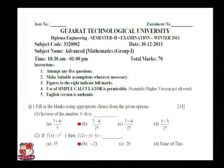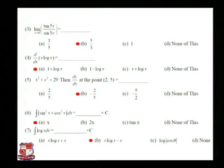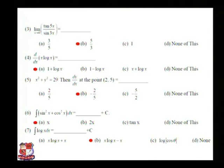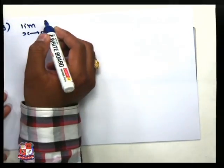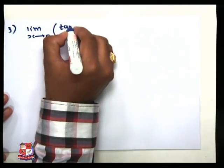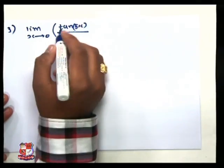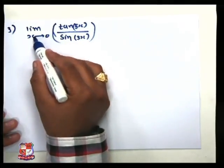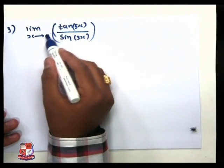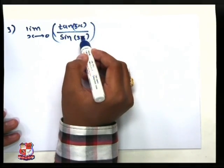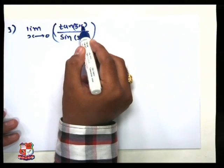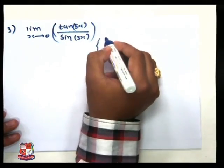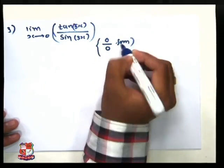Now we want to move to our third question. The third question is: limit as x tends to 0 of tan(5x) divided by sin(3x). This is a limit-type question. First of all, we put x equal to 0: tan(0) divided by sin(0) gives 0 divided by 0, so this is a 0 by 0 form.